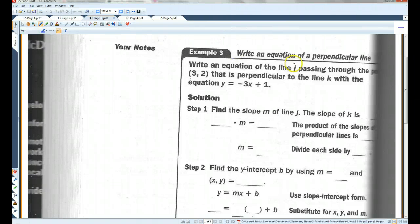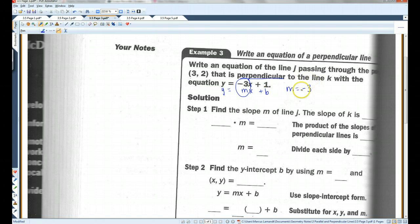Okay, example 3. Write an equation of the line j passing through the point 3, 2, that is perpendicular to the line k with the equation y equals negative 3x plus 1. Alright, we're going to start this out the same way. Y equals mx plus b. The slope of this line is negative 3. But, because we're looking for a perpendicular line, if we were looking for a parallel line, we would just use negative 3 as our slope. But perpendicular, we need to find the opposite reciprocal, which means I need to flip this over and change the sign. So, that's what I did here. I turned it upside down. This one was negative, so now it becomes positive.